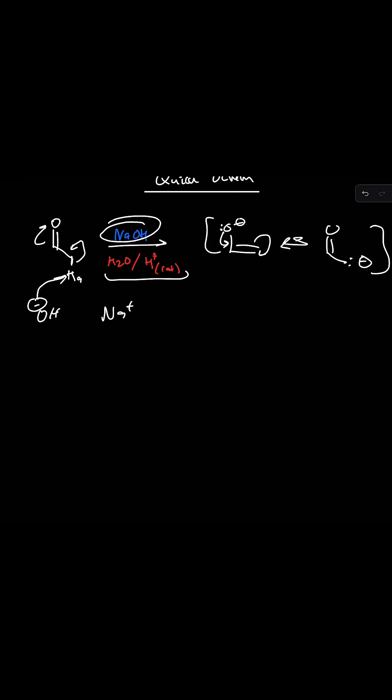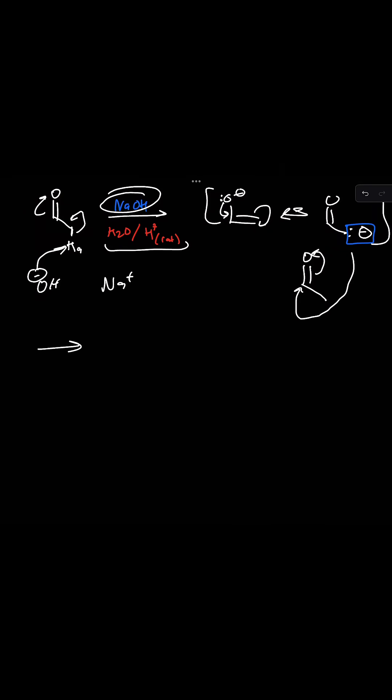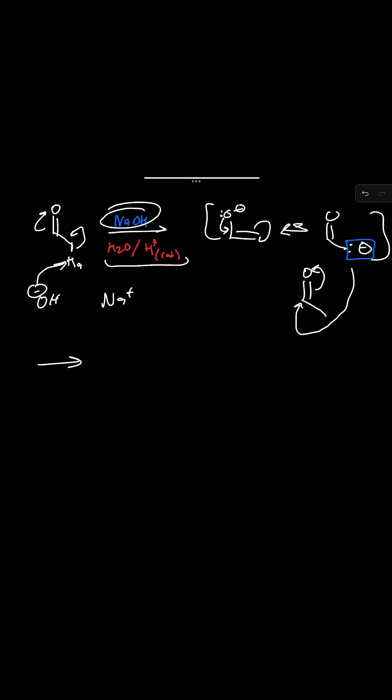Since we have more aldehyde in solution, we can use this nucleophilic carbon that's negatively charged to attack the carbon double bonded to the oxygen. We have to push these electrons up so it doesn't have more than four bonds, and we get this structure.